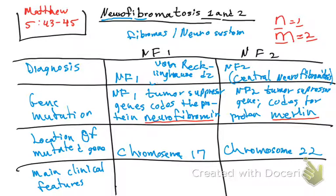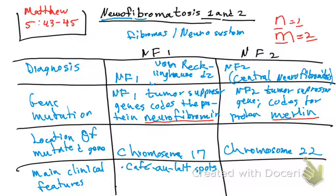Now for the clinical manifestations of each disease. In neurofibromatosis type 1, the patient is going to present with café-au-lait spots, multiple neurofibromas, and Lisch nodules.